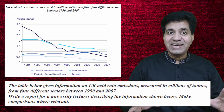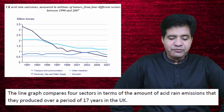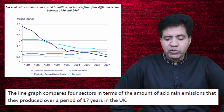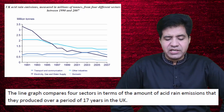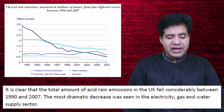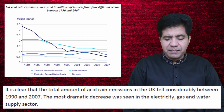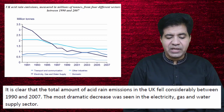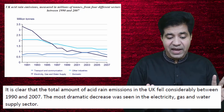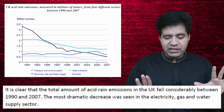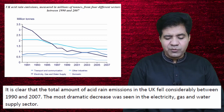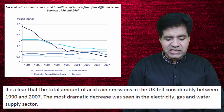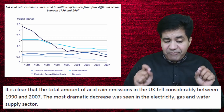Now let's see how this report is written. The line graph compares four sectors in terms of the amount of acid rain emissions that they produce over a period of 17 years in the UK. It is clear that the total amount of acid rain emissions in the UK fell considerably between 1990 and 2007. The most dramatic decrease was seen in the electricity, gas and water supply sector.